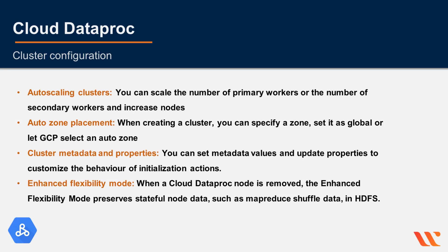You can scale the number of primary workers or secondary workers and increase nodes; auto-scaling is still in beta. When creating a cluster, you can specify a zone, set it to global, or let GCP select an auto zone by leaving it blank. You can also set metadata values and update properties to customize the behavior of initialization actions.